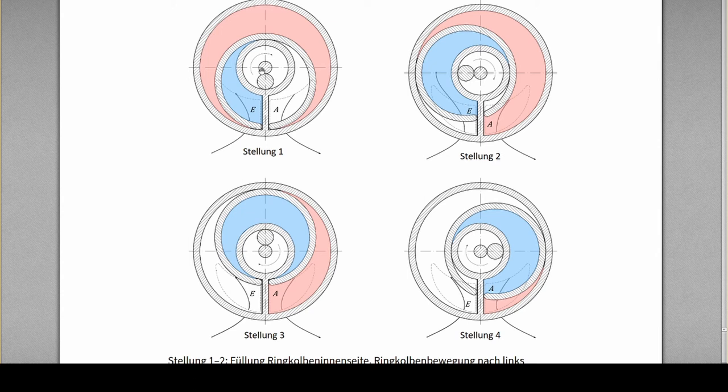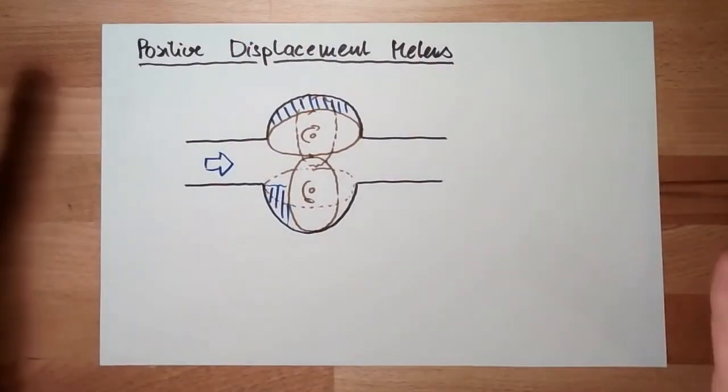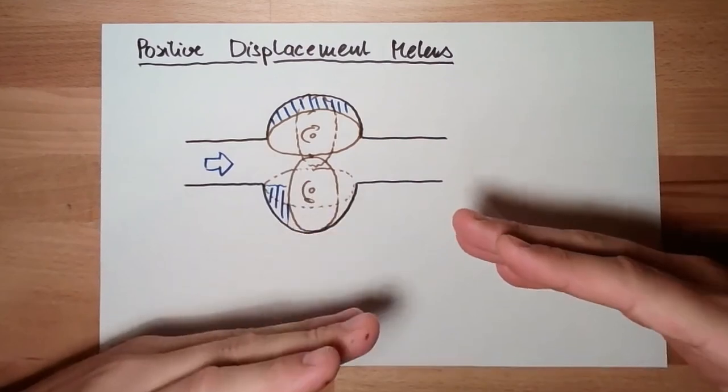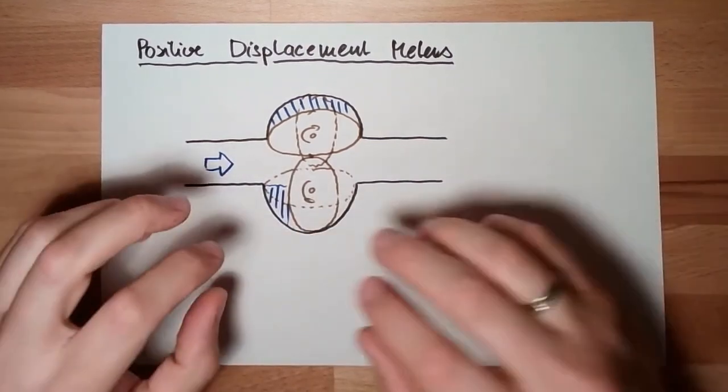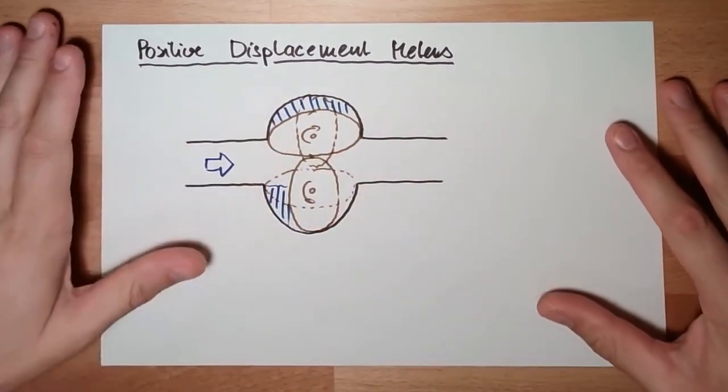But keep in mind, inside there's nothing really rotating. It's just wobbling around. That's it. Ringkolbenzähler, notation disk. So you see, there can be various constructions of these positive displacement meters.